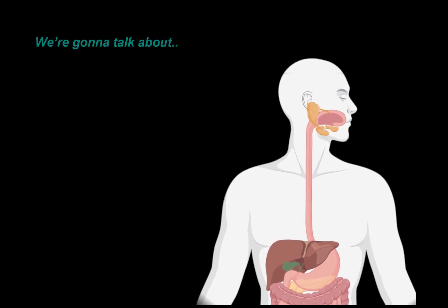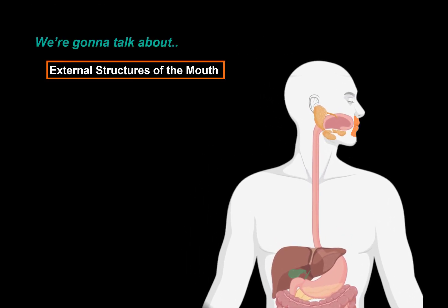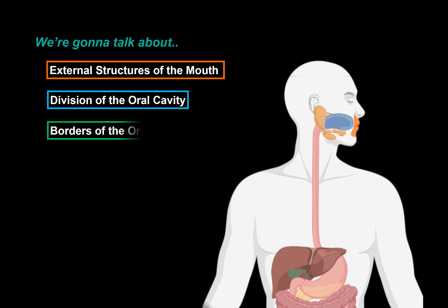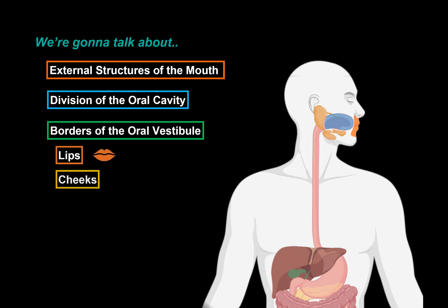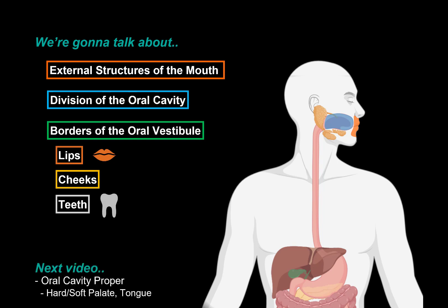So in this video, we're first going to talk about the main external structures of the mouth. Then we're going to go through the division of the oral cavity — basically how we divide the oral cavity. After that, we're going to talk about the structures associated with the borders of the oral vestibule, which include the anatomy of the lips, cheeks, and the teeth. And then in the next video, we'll focus on the other part of the oral cavity, which is the oral cavity proper.